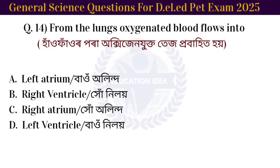Next question: from the lungs, oxygenated blood flows into the left atrium.